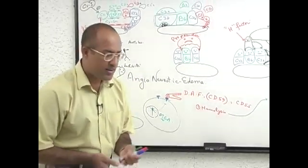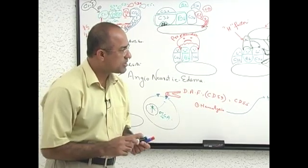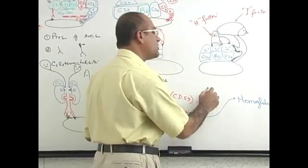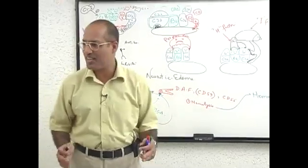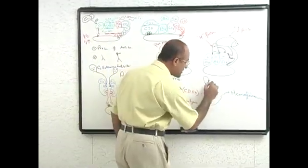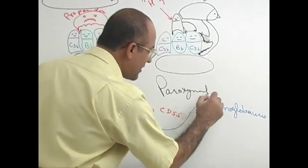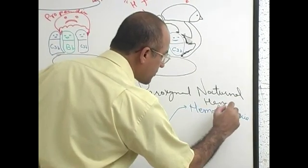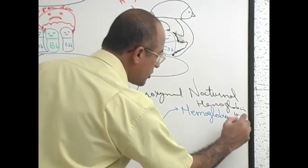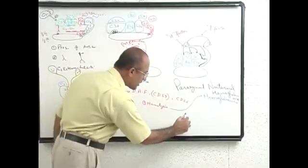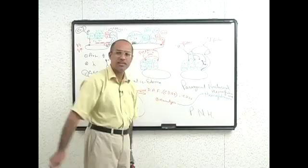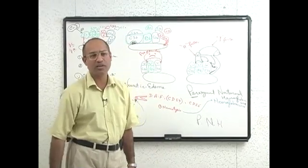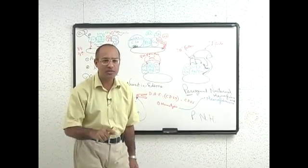The name of this condition is Paroxysmal Nocturnal Hemoglobinuria. However, 'paroxysmal' is a misnomer — it should not be called paroxysmal because the majority of patients have chronic hemolysis, not episodic.